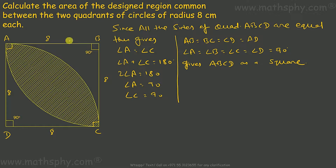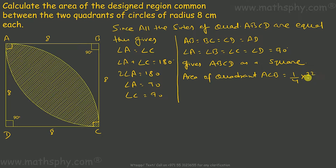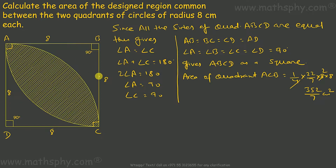Now let's find the area of quadrant ACB. Area of quadrant ACB equals 1/4 × (22/7) × radius squared = 1/4 × (22/7) × 8 × 8. This gives 352 over 7 cm squared. The area of quadrant ACB and quadrant ACD are both equal because they have the same radius.